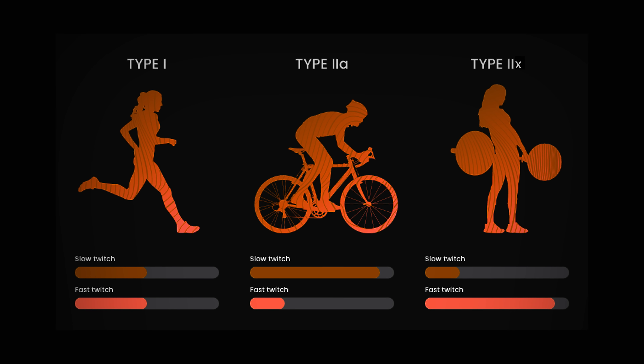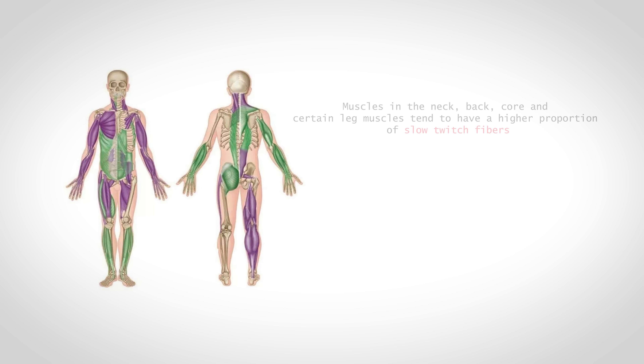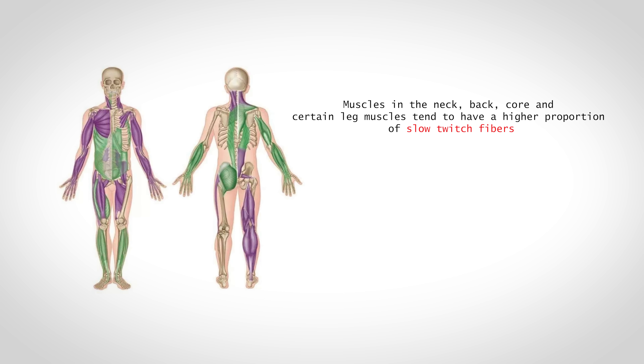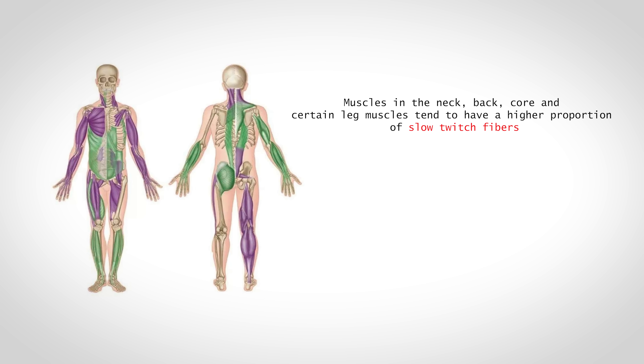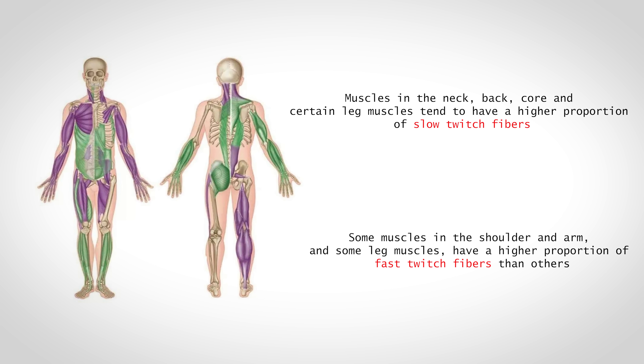This isn't completely set in stone. Based on the type of training we choose to participate in, not only do the fibers we have adapt, but we can also see some conversion of one fiber type into another. Even though we see variation in percentages from person to person, we do share some general commonalities — muscles considered postural muscles found in the neck, back, core, and certain leg muscles tend to have a higher proportion of slow twitch fibers, whereas muscles of the shoulder and arm and certain leg muscles have a higher proportion of fast twitch fibers.